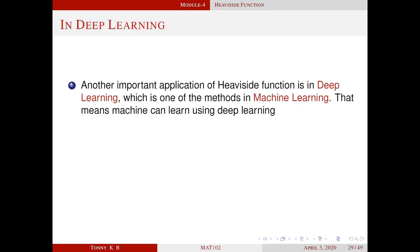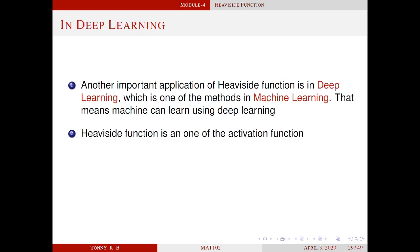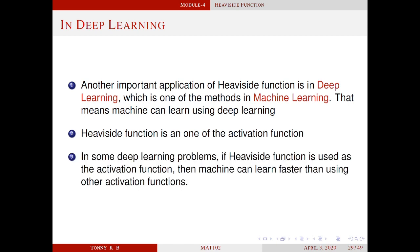Another important application of the Heaviside function is in deep learning, which is one of the methods in machine learning. In deep learning there is a function called the activation function. Some activation functions are the unit step function, sigmoid function, and ReLU function. One important aspect of machine learning is the learning rate — how fast a machine can learn. In some deep learning problems, if the Heaviside function is used as the activation function, the machine can learn faster than with other activation functions.